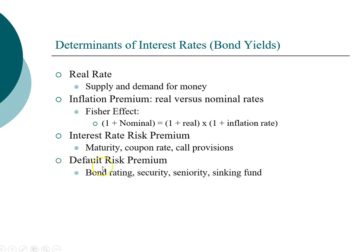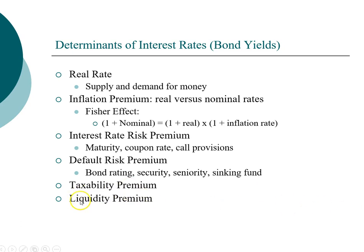Default risk is also important and is represented by bond ratings, which take into account the security of the bond, seniority, and whether or not there is a sinking fund provision. Municipal bonds do not have to pay tax, so they don't carry a tax premium, but a corporate bond is subject to tax, so it carries a tax premium. Liquidity premium refers to how easy it is to sell a bond when you need to convert it into cash.